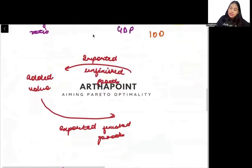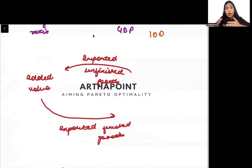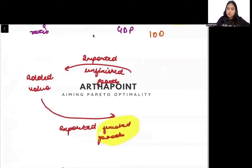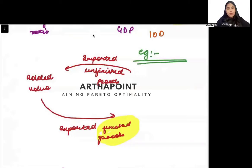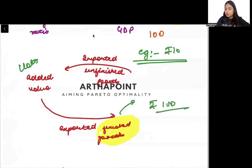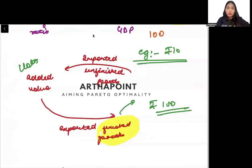What these countries actually did is they imported unfinished goods, added value to them, converted them into finished goods, and then exported those finished goods. For example, they imported cotton worth 10 rupees, converted it into cloth, and exported the cloth worth 100 rupees. The import value was low, the export value was high, and their GDP flourished.